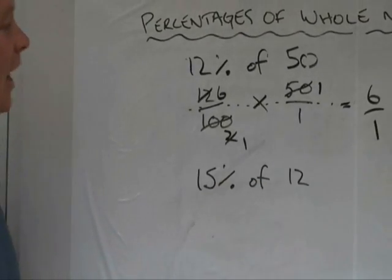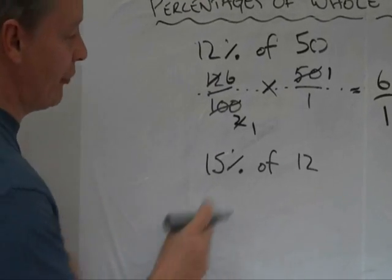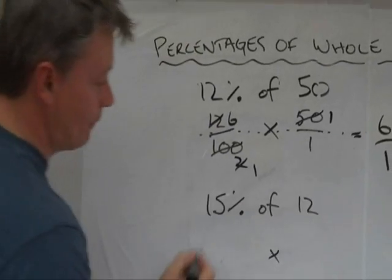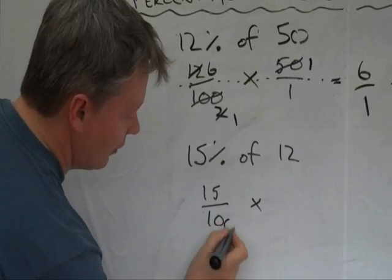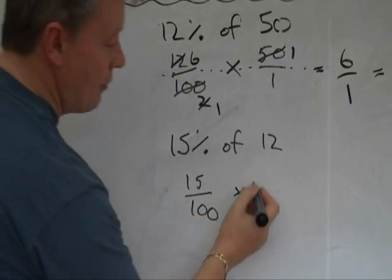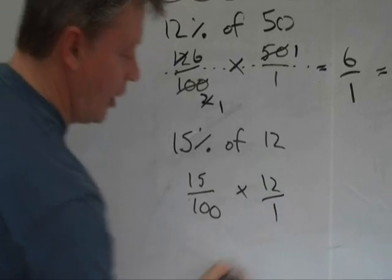Okay. And just the same as I've done before, of becomes multiply. Percent becomes a fraction, 15 over 100. And the number becomes 12 over 1.